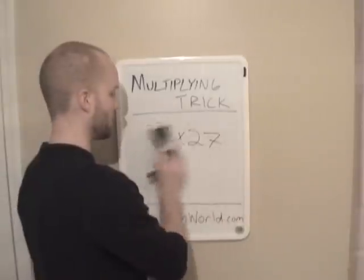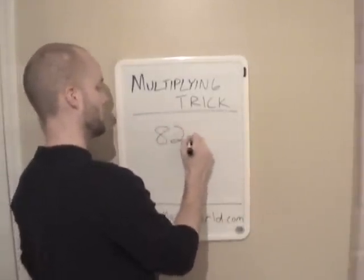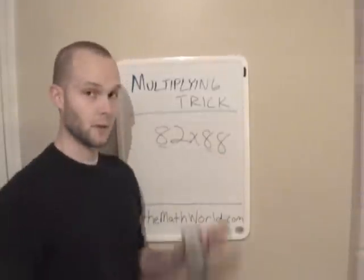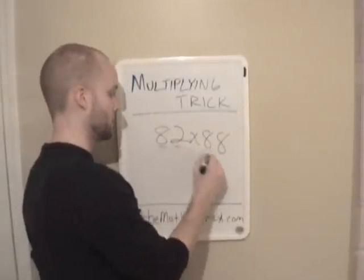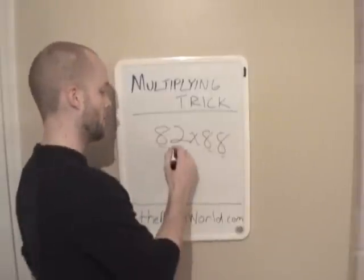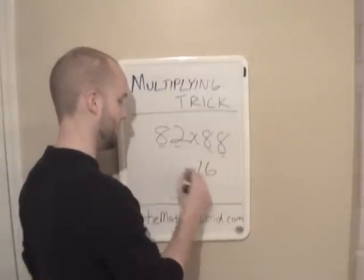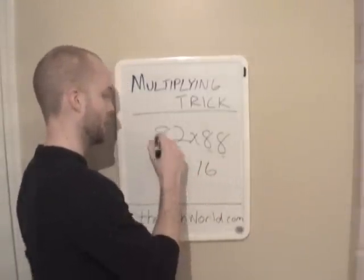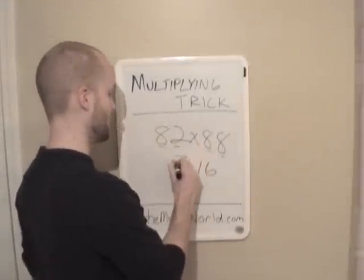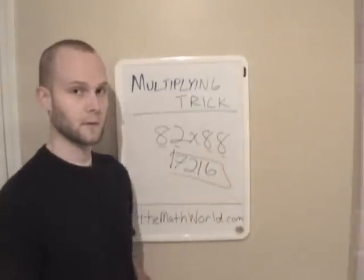Let's do another example: 82 times 88. As you can see, the tens digits are the same — they're both 8 — and 2 plus 8 is equal to 10. So first, 2 times 8 is 16 — we just write down 16. Then 8 times the next highest number, which is 9: 8 times 9 is 72. So the answer is 7,216.